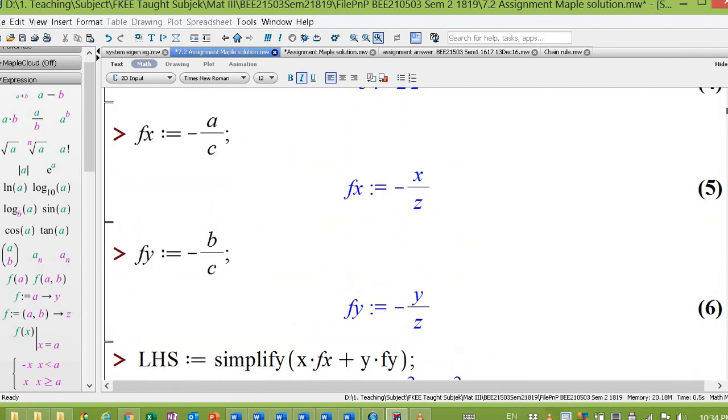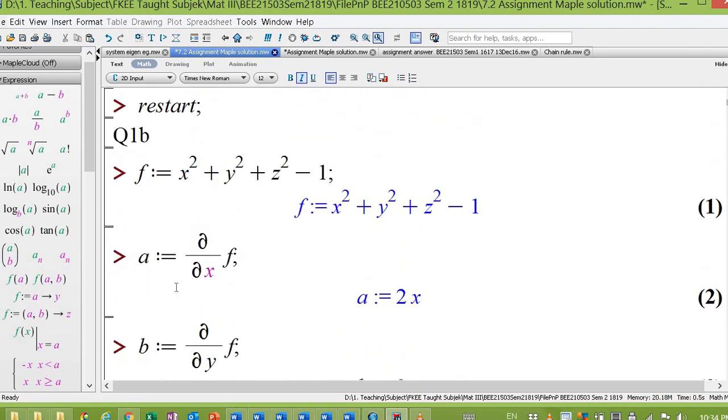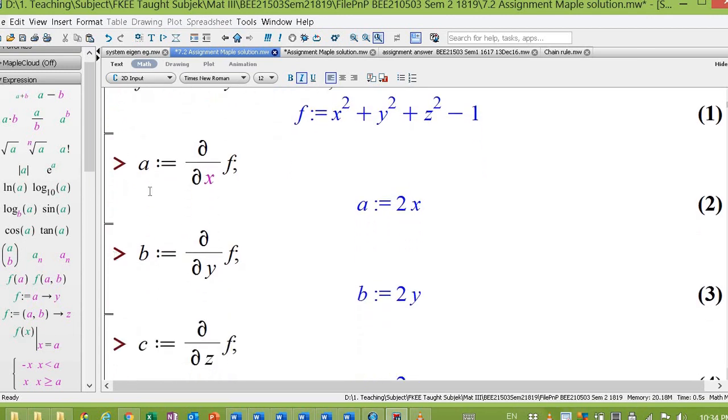Okay, so this is how we do implicit differentiation using Maple. First, you find the first derivative respect to x, respect to y, respect to z, where I assign them into variable a, b, c.